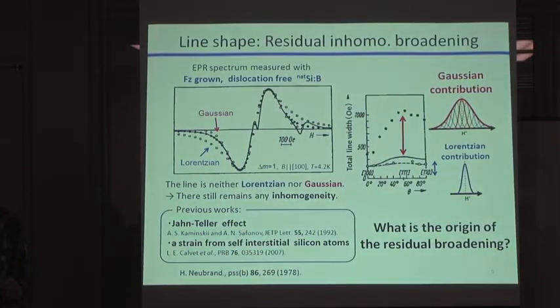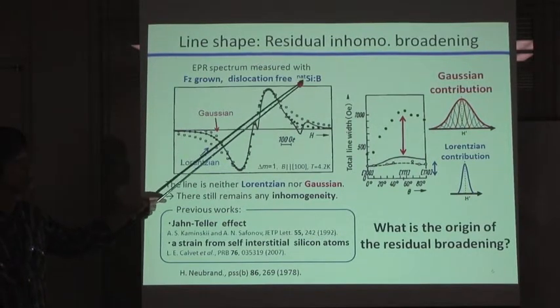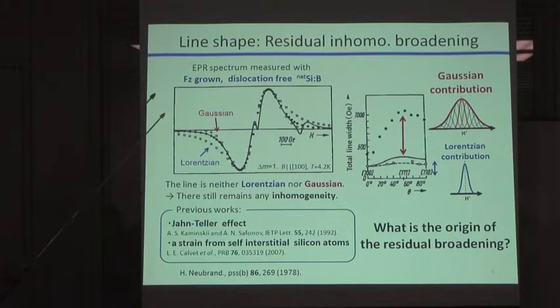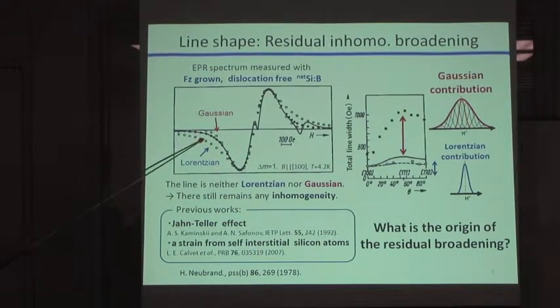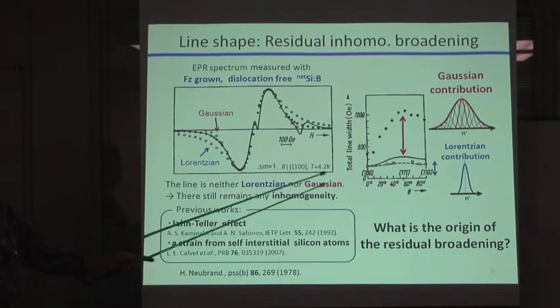In the first report written by Newbrand, he also performed a detailed line-shape analysis. This is one of the inter-subband resonance spectra, measured with boron-doped floating-zone, grown dislocation-free, very pure natural silicon sample. In this figure, a solid line is experimental data, and open square and open circle is a numerical fitting curve of Lorentzian line and Gaussian line.